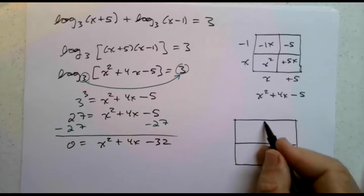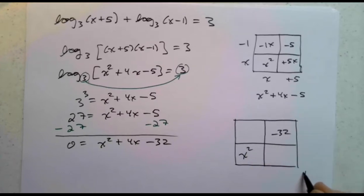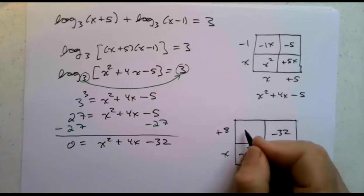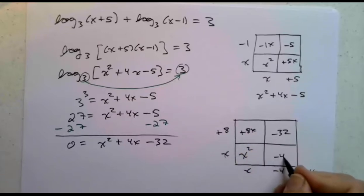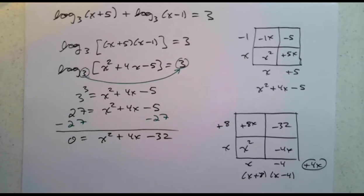So let's look at that: x squared here, minus 32 here, plus 4x there. x times x. I believe it's going to be plus 8 and minus 4. Plus 8x minus 4x is plus 4x. x plus 8 times x minus 4. So we get 0 equals x plus 8 times x minus 4. So x plus 8 is 0 or x minus 4 is 0.